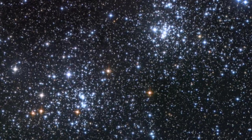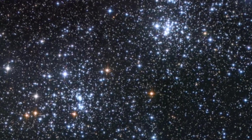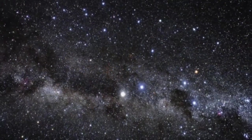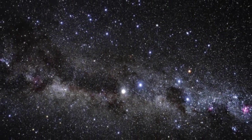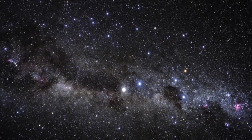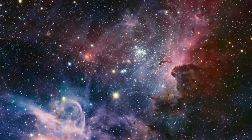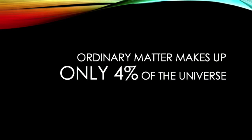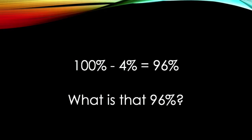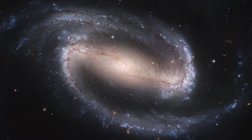That's a lot of matter, isn't it? Well, sort of. Visible matter — what you and I can see — is referred to as ordinary matter. Ordinary matter only makes up 4% of the universe. So where does the other 96% lie?